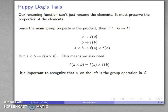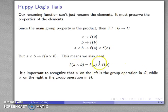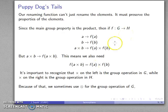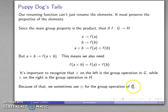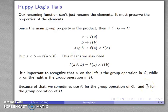There's one possible point of confusion: the multiplication symbol on the left-hand side involves the operation in G, while the multiplication symbol on the right — since F(A) and F(B) are elements of H — refers to the group operation in H. To avoid confusion, we'll use different symbols: a circle-times to indicate the group operation in G, and a circle-plus to indicate the group operation in H.